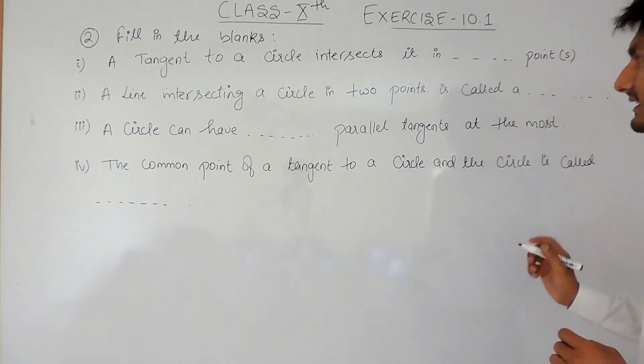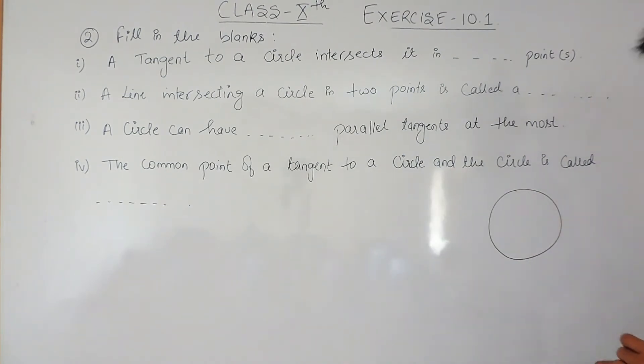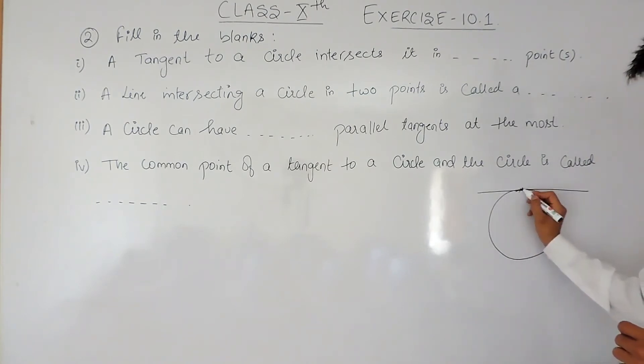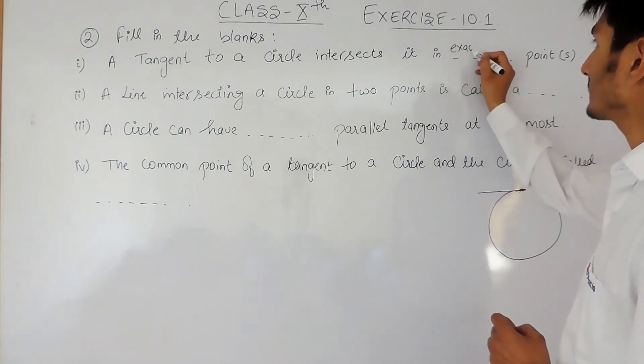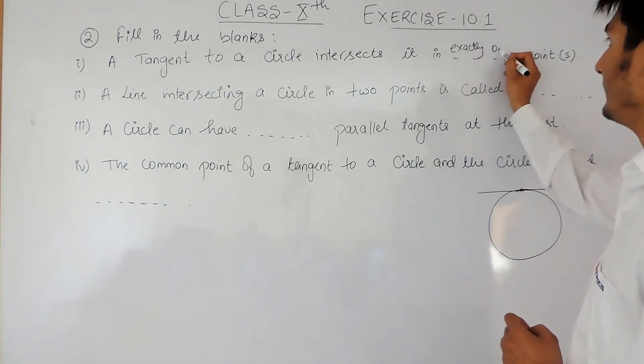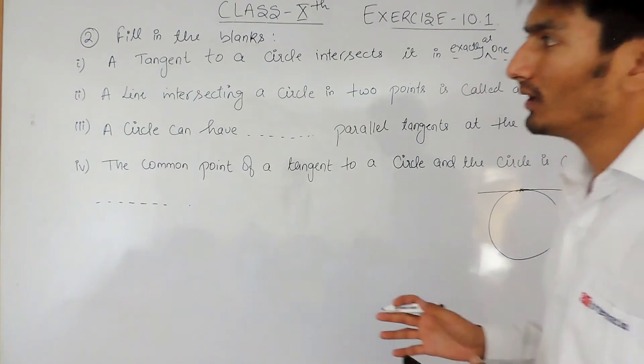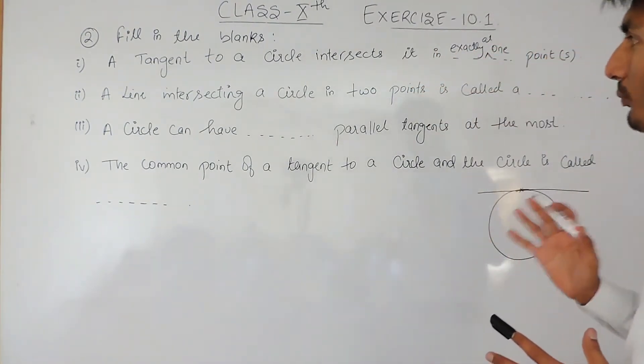If I draw a circle and then draw a tangent, this tangent will intersect the circle exactly at one point. So the answer is exactly one point.